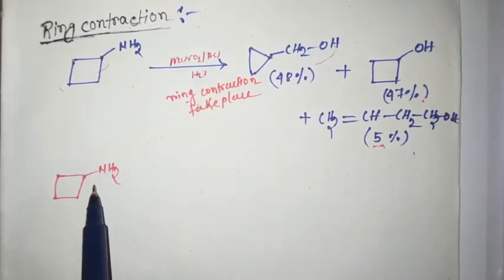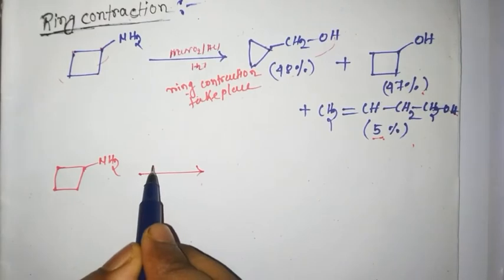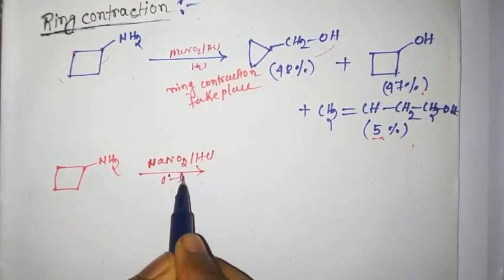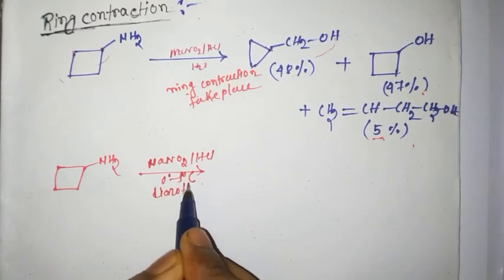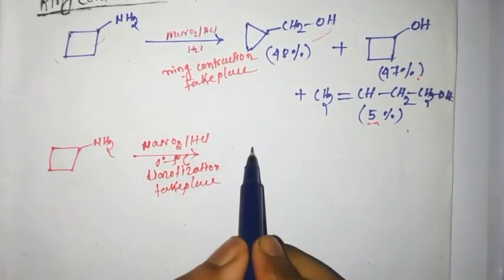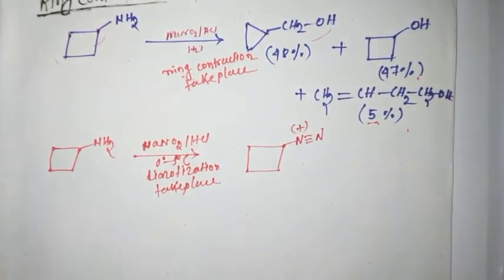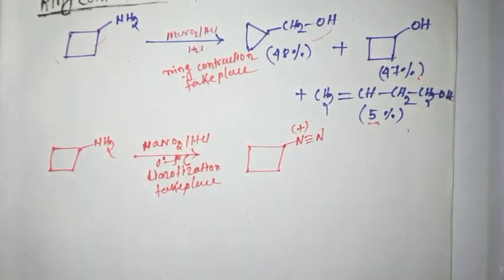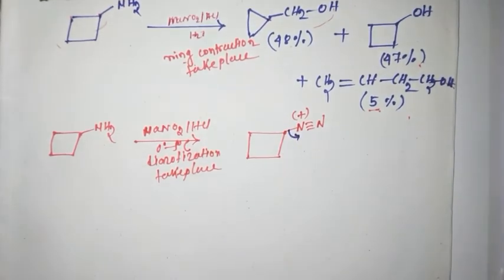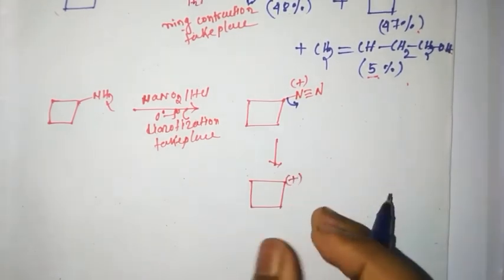First, we draw this cyclic primary amine. First step, NaNO2HCl at 0 to 5 degrees Celsius, diazotization takes place and gives this product. Now, this sigma bond breaks and forms this type of carbocation intermediate.